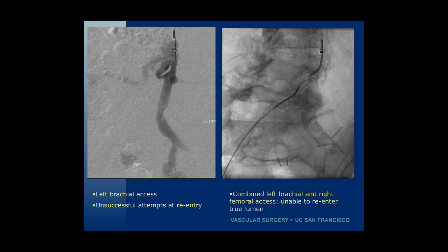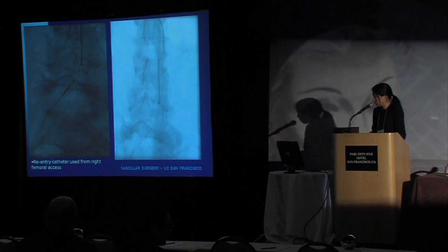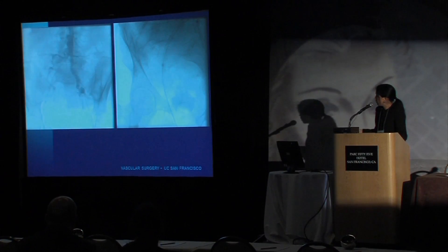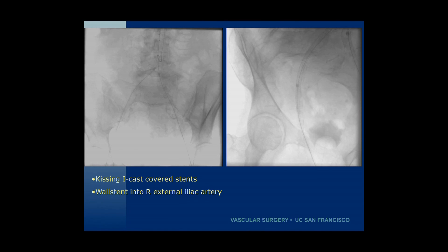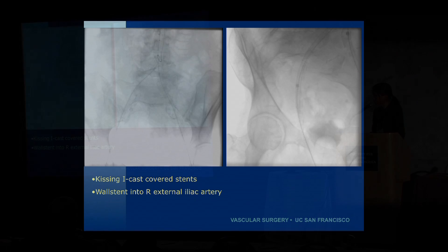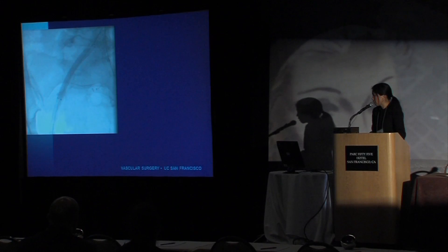We were in a sub-intimal plane and unable to enter the true lumen. A re-entry catheter was successfully used from the right femoral approach and gained access into the true lumen. Kissing ICAST covered stents were placed into the common iliac arteries, and then a wall stent was placed into the right external iliac artery. There was a rupture in the right common iliac artery, which was treated by placement of a covered stent.